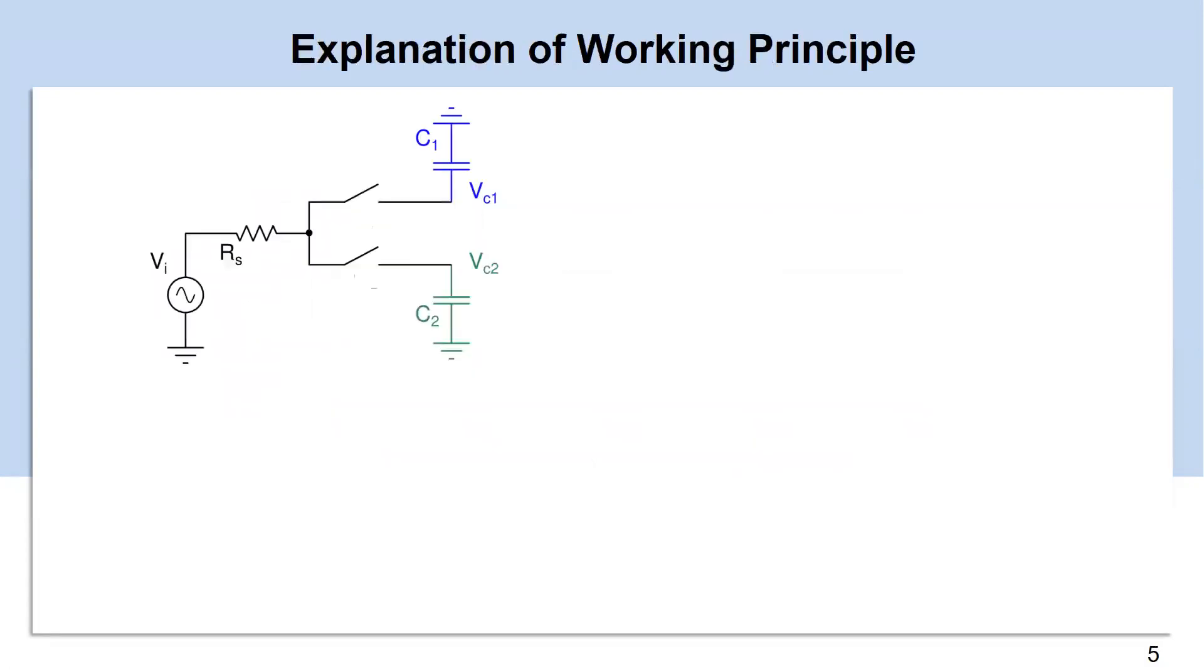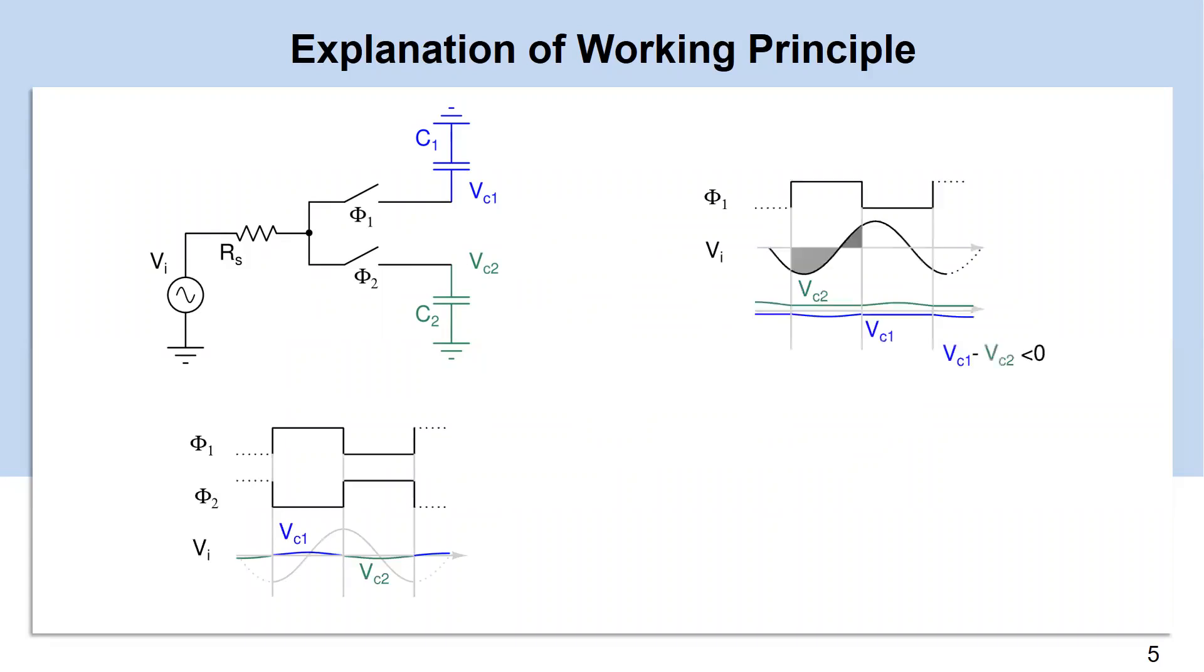Consider the two-path filter operating at frequency of blocker and being driven by clocks phi1 and phi2. Under the condition of quadrature phase alignment between the clock and the input, when switches are on, VC1 and VC2 are identically zero.